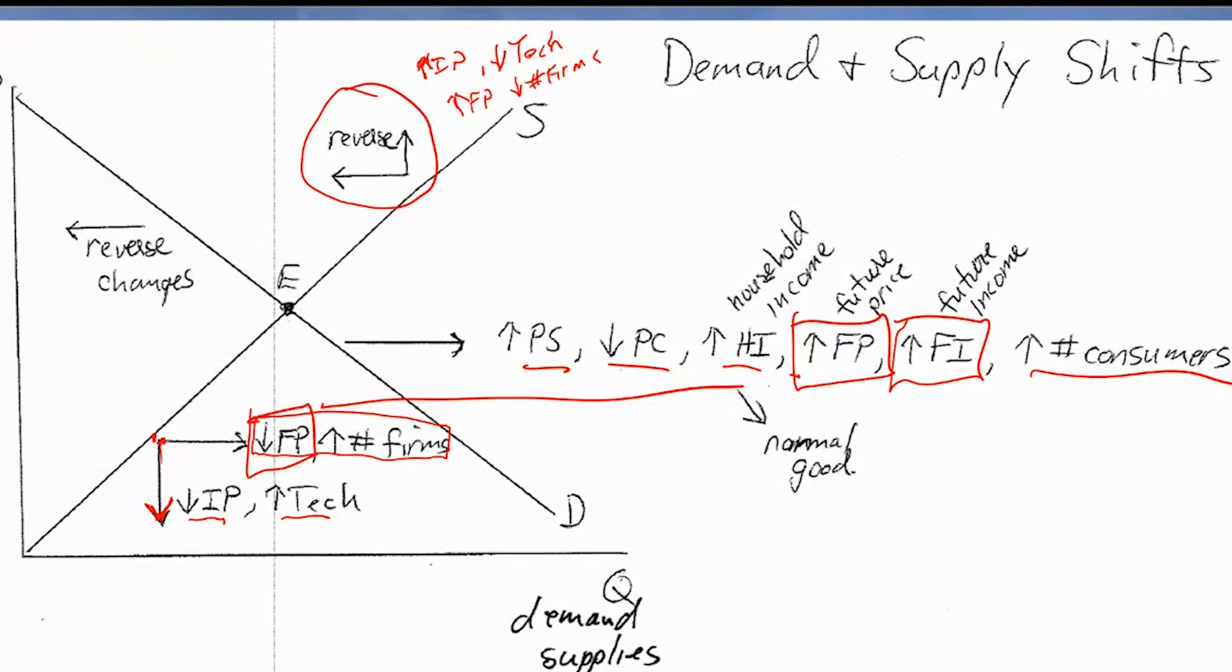But changes in the market are going to first be influences on the behavior of either consumers or the behavior of firms, and things are going to affect them differently. So for example, if the input prices change for the firms, if they have to pay more for steel because a tariff has been put on imports of steel, well, that doesn't affect the demand decisions at all. Consumers don't care about what the price of steel is. It doesn't affect their desire to purchase products that have steel contained within them.